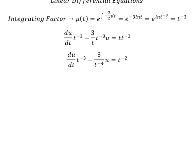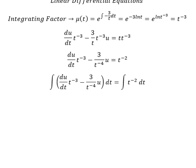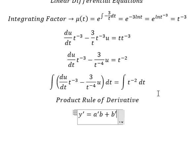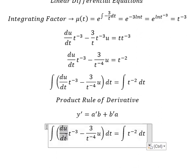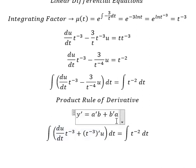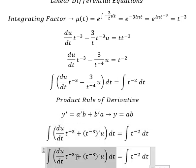Next we put the integral on both sides. We can use the product rule of the derivative, so the left side gives us the first derivative of the product: first derivative of u multiplied by t^(-3) plus u times the first derivative of t^(-3).